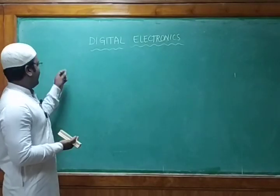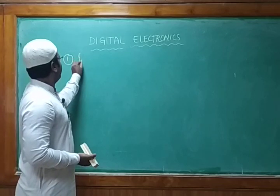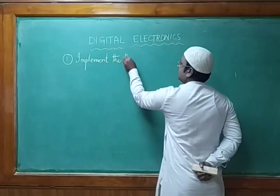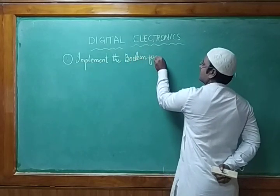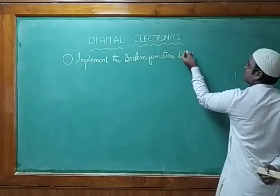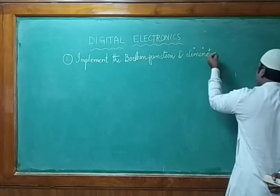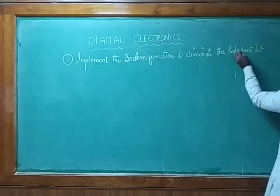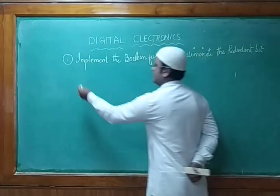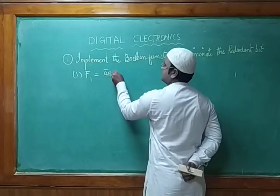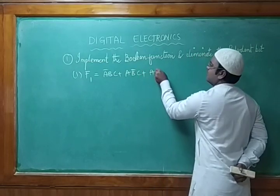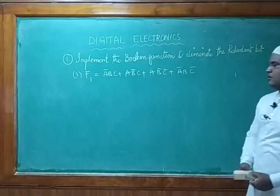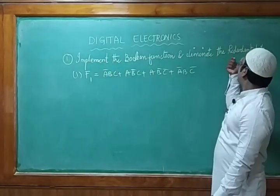Now, let's come back to the first problem. Suppose they gave a question to implement the Boolean function and eliminate the redundant bits. The function given is: f1 = ā·b·c + a·b̄·c + a·b̄·c̄ + a·b·ā·b·c̄. So here, what we need to do is implement the Boolean function and eliminate the redundant bits.